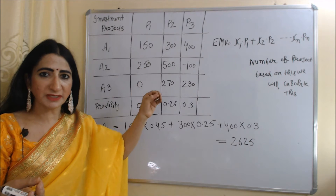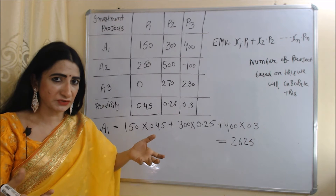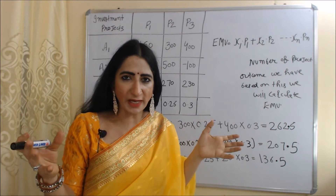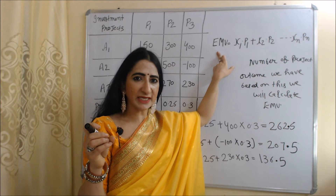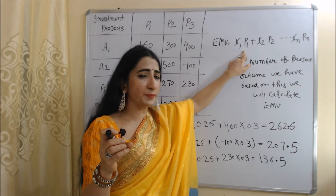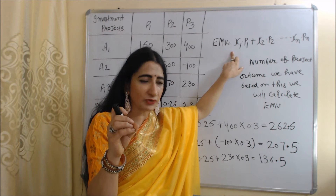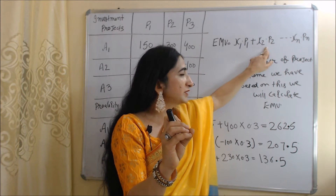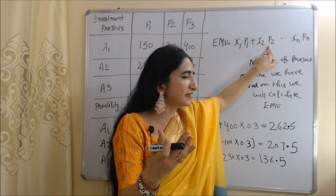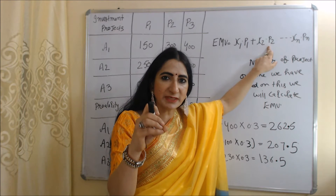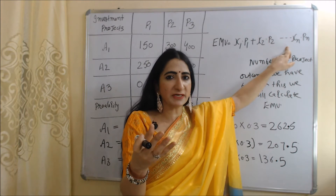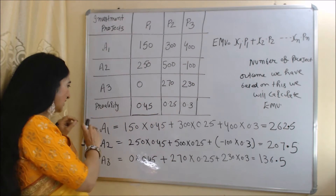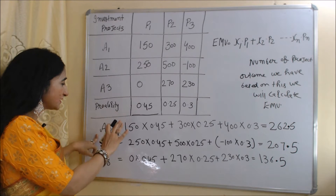The question is how we calculate the Expected Monetary Value. The formula for calculating EMV is: X1 × P1 + X2 × P2, and so on. Here X1 is the first expected outcome, P1 is the probability of that first expected outcome, X2 is the second expected outcome, P2 is the probability of the second expected outcome, and so on depending on how many expected outcomes we have. Based on this formula, we will calculate the EMV for each project.